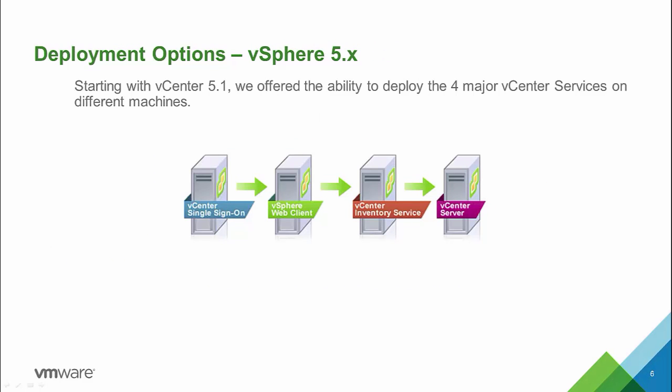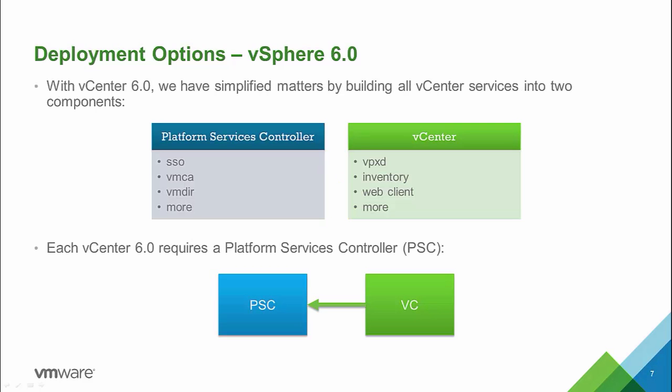Starting in vCenter 5.1, it was possible to install the four core services — single sign-on, web client, inventory service, and vCenter server — onto different machines, which created countless deployment models. With vSphere 6.0, we have removed this complexity and grouped all services into two components: the Platform Service Controller and the vCenter Server. Each vCenter requires one Platform Service Controller, though it can be shared amongst multiple vCenters.